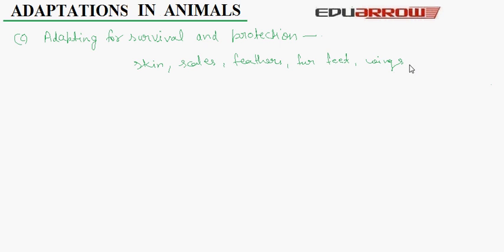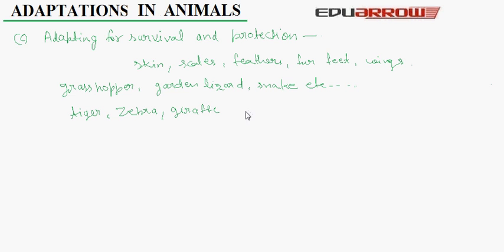Some animals like grasshopper and garden lizard have some special features. These animals can change their color according to their surroundings and it helps them to hide from their enemies. Some animals like tiger, zebra and giraffe have spots or stripes on their body which helps them to merge with their surroundings and protect them from their enemies.